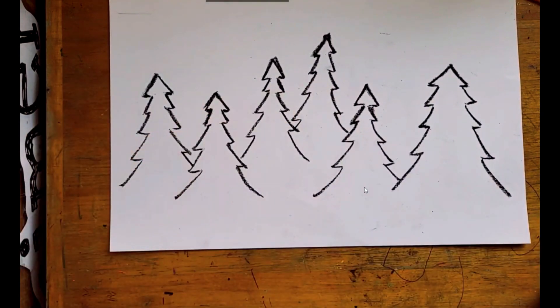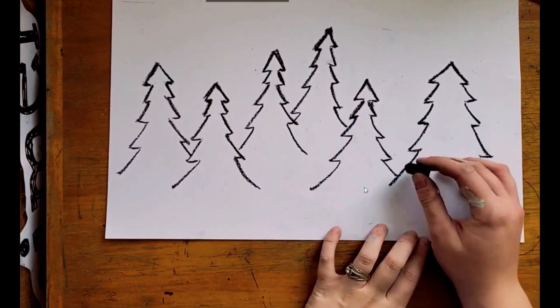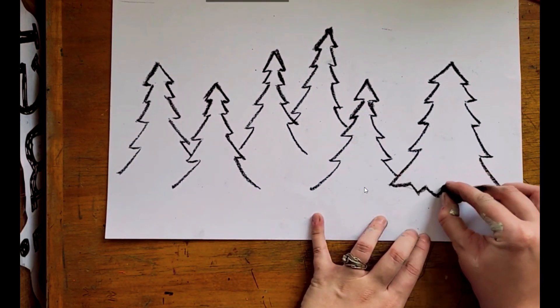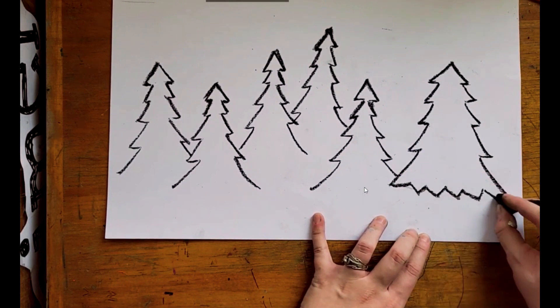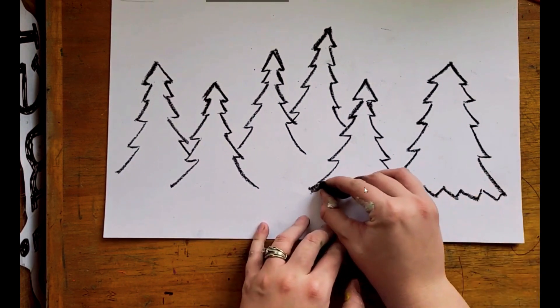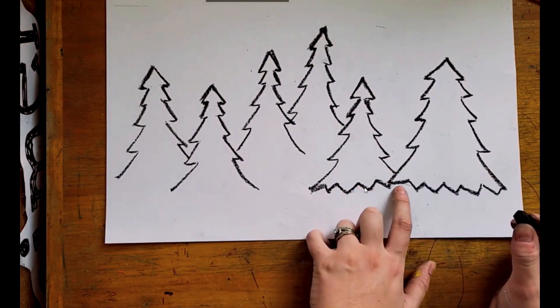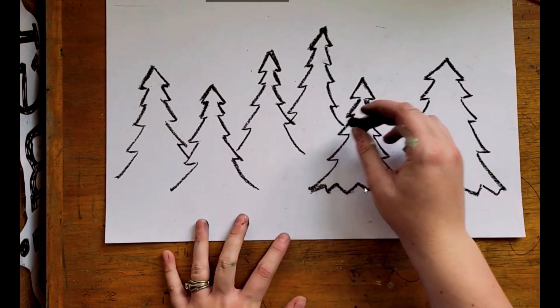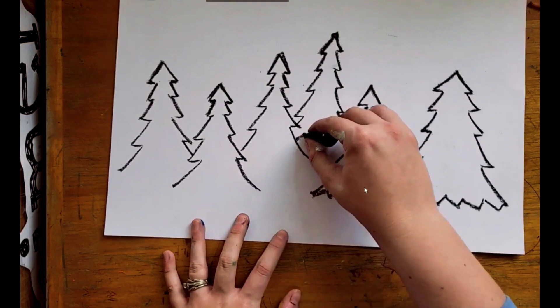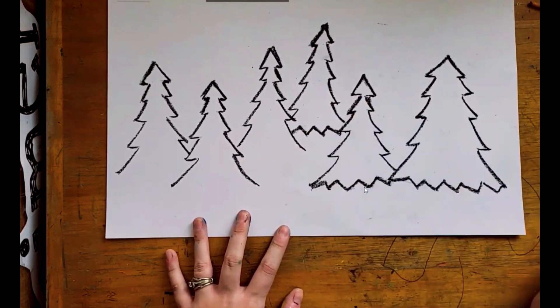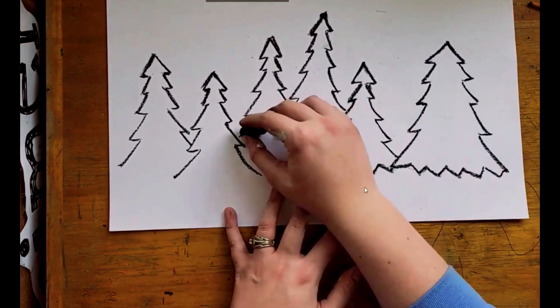Okay. So now I'm going to draw the bottoms of my trees. So the bottom of your tree could be straight. That's not very realistic. So I'm going to make mine kind of bumpy, like a zigzag line. And I'm going to connect the bottom together. And if you touch another tree, you'll just stop. And then that tree looks like it goes behind the other tree, which is actually a really cool addition to your art, make it more interesting. They're overlapping.